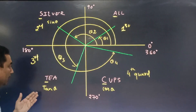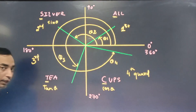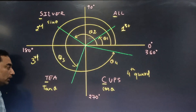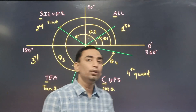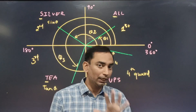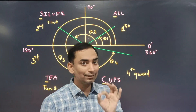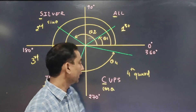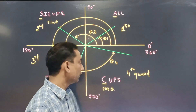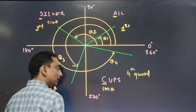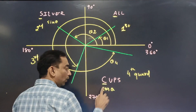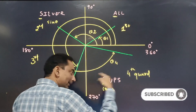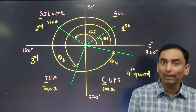In the third quadrant, take 200 degrees — it's between 180 and 270. Only tan 200 remains positive; sin 200 and cos 200 are negative. In the fourth quadrant, 300 degrees lies between 270 and 360. Only cos 300 is positive; sin 300 and tan 300 are negative. You don't need to calculate the values in grades 9-10, but you must know their signs.